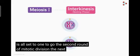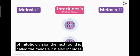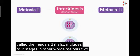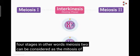The next round is called the meiosis II. It also includes four stages. In other words, meiosis II can be considered as the mitosis of haploid cells.